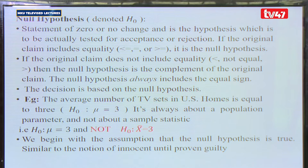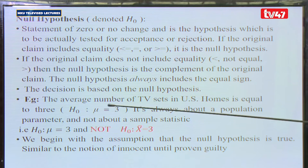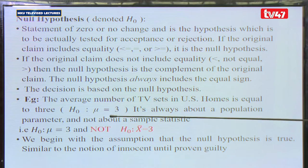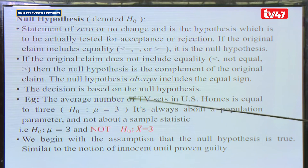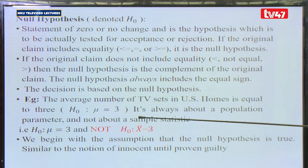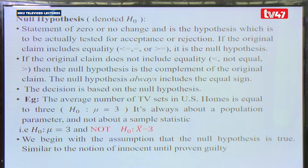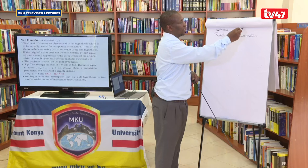For example, an assertion can be: the average number of TV sets in US homes is equal to 3. So our null hypothesis H₀ is that the mean number of TV sets equals 3. It is always about the population parameter and not about the sample statistic. In research we have sample statistics and population parameters — these are two distinct domains.